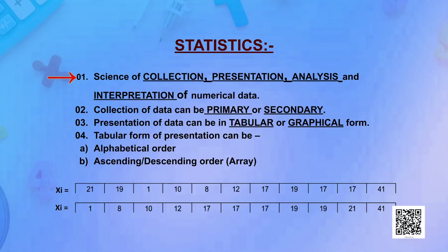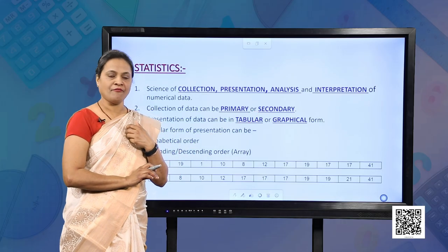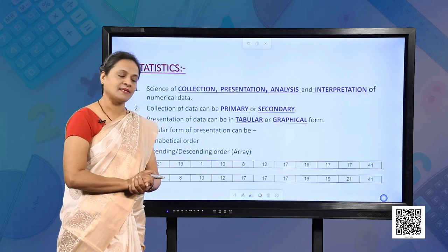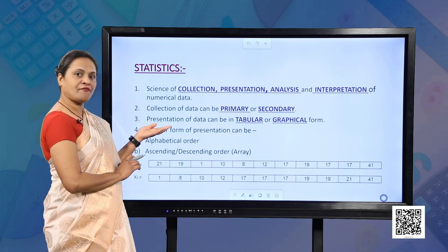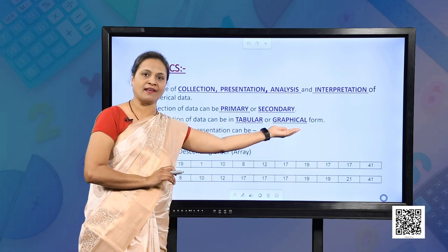In your previous classes you have studied that Statistics is the science of collection, presentation, analysis and interpretation of data. We know that collection of data can be primary as well as secondary. Primary, when I collect the data myself, and secondary, when I take the data from somewhere else. Presentation of data can be in two forms: tabular form or graphical form.